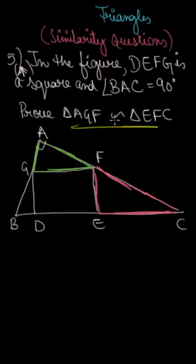So let's see. First of all, in this triangle, angle A is 90 degrees, and this is also 90 degrees because it is a square.